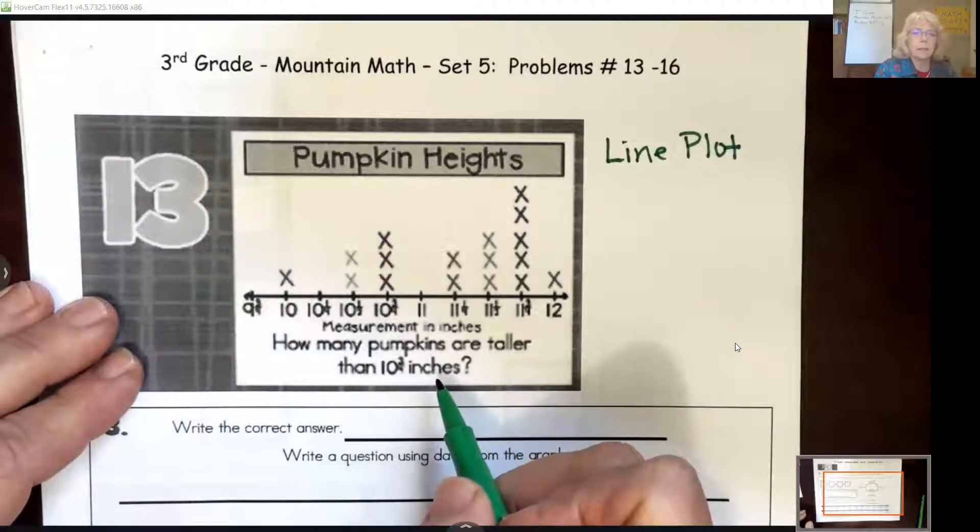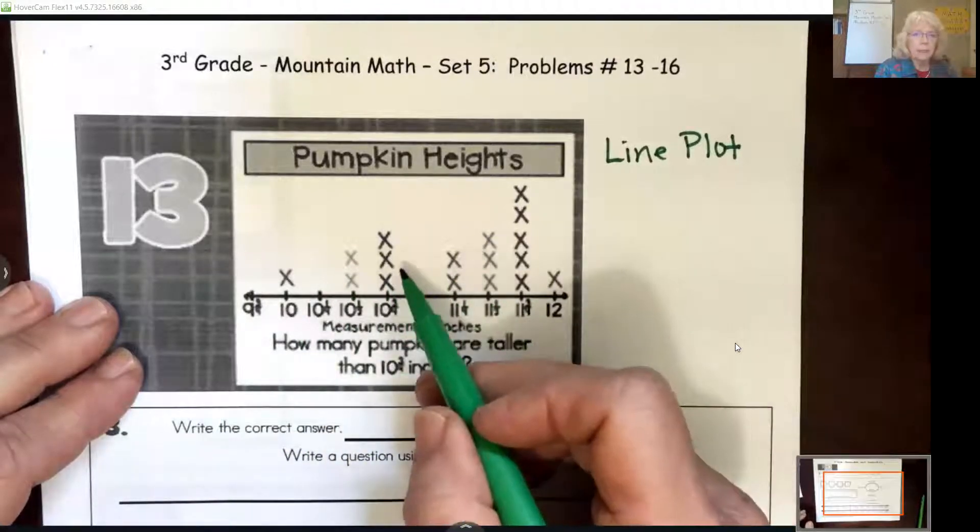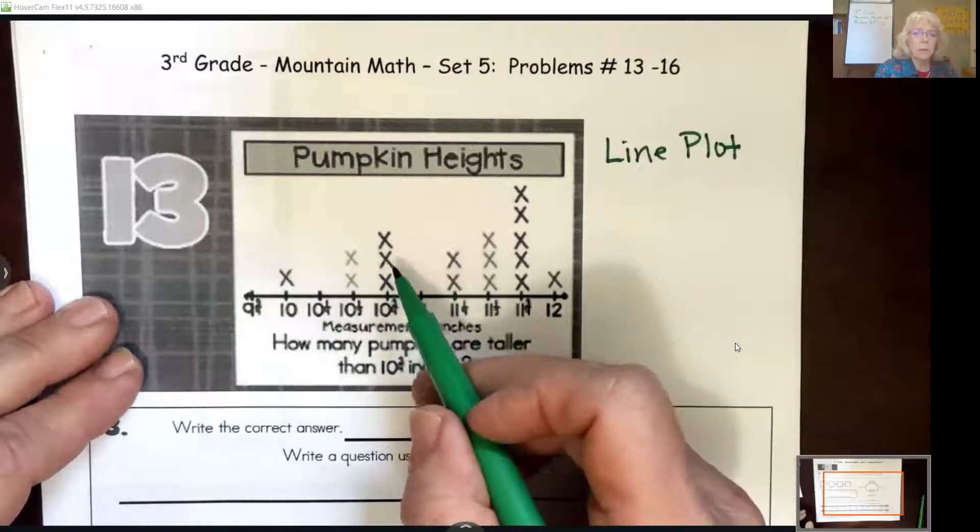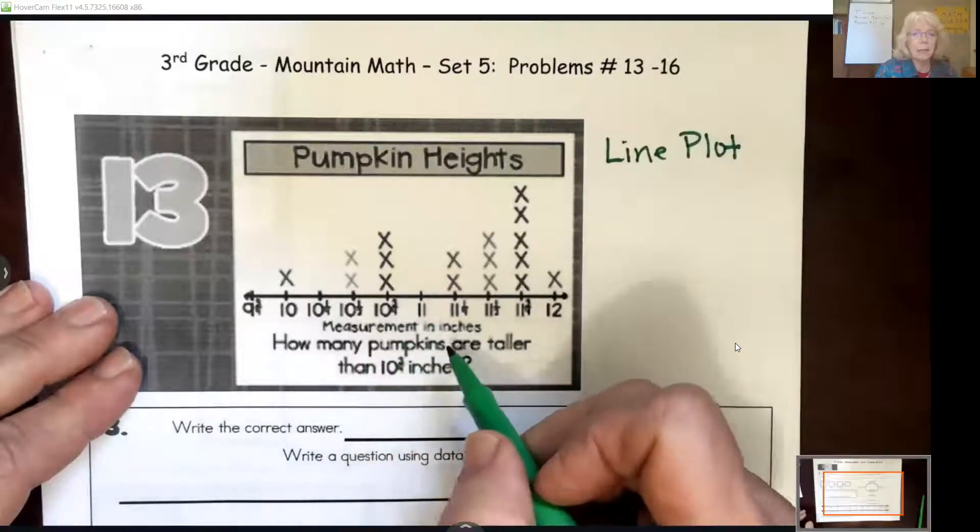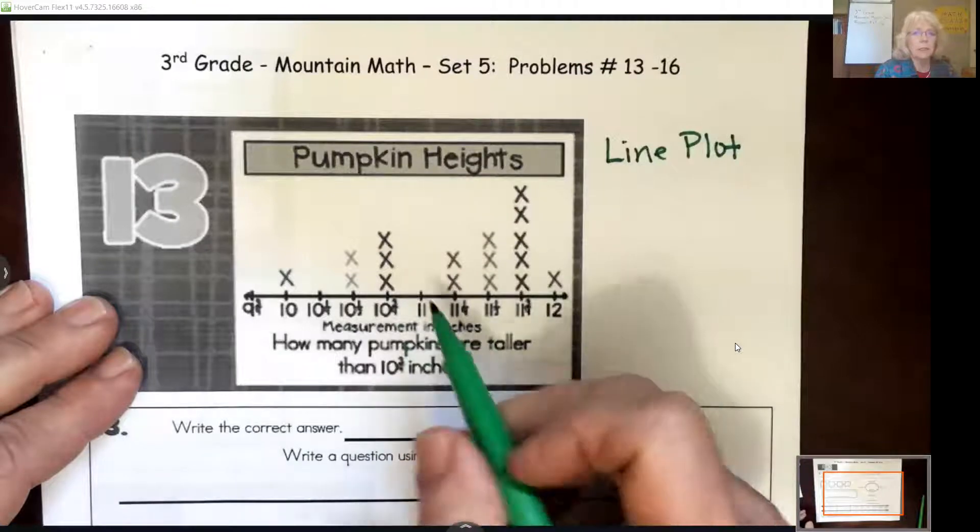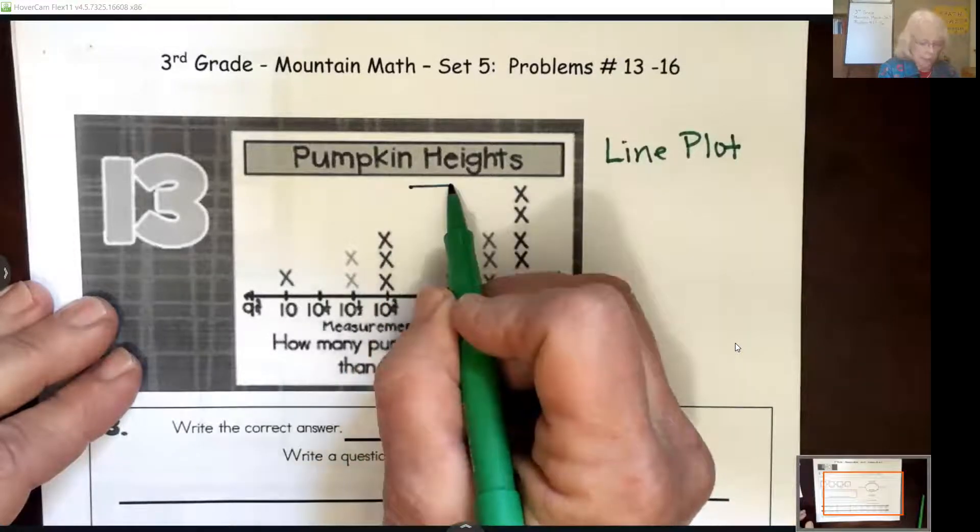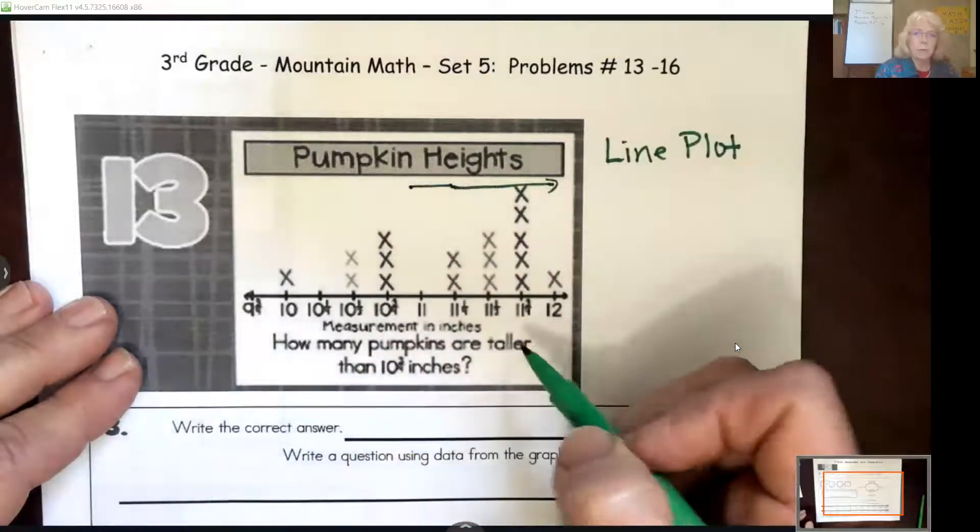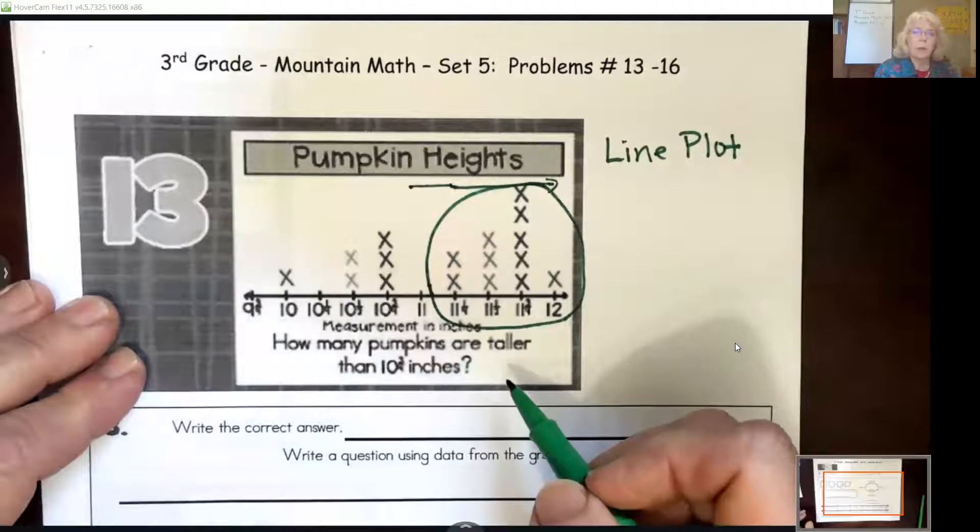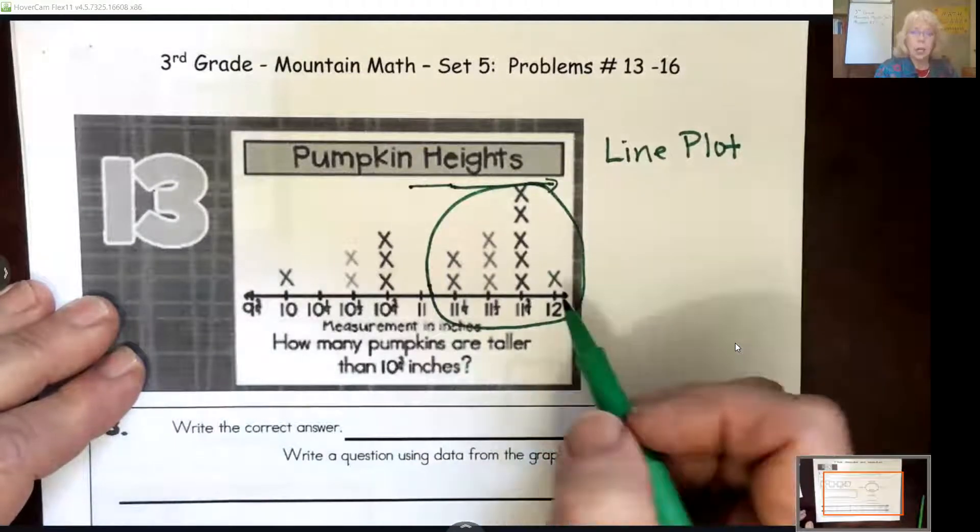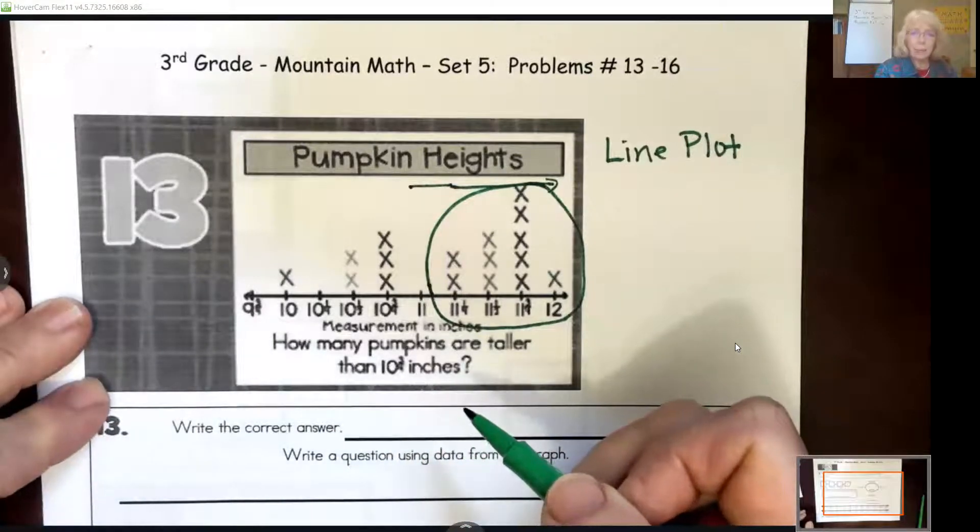It's asking how many pumpkins are taller than ten and three quarters inches. So each X stands for a different pumpkin. Now it's not asking us that. It's asking how many are taller than ten and three quarters inches. So we don't get to consider those. We need to look at everything this side on this line plot.